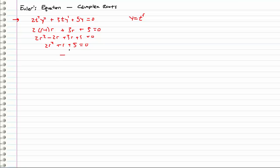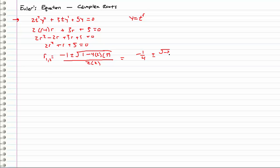This doesn't factor, so let's use the quadratic formula. r1, r2 is equal to negative b, so negative 1 plus or minus the square root of 1 minus 4 times 2 times 5, all over 2 times 2. That gives us negative 1/4 plus or minus the square root of 1 minus 40, which is the square root of negative 39, all over 4. We notice that we have a square root of a negative, so that gives us complex numbers — a real portion and a complex portion. Writing this out: negative 1/4 plus or minus the square root of 39 over 4 times i.